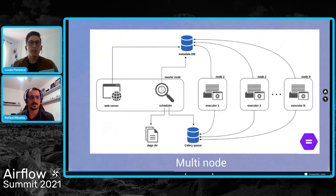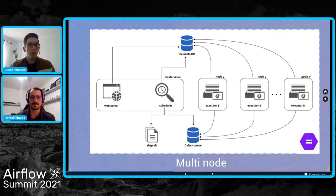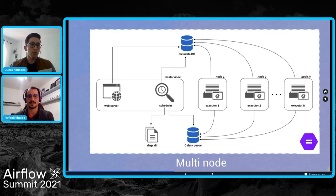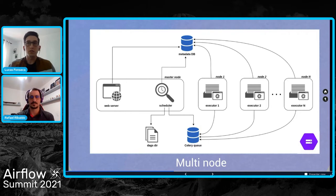In this multi-node approach, the web server, the scheduler, and the executor run independently in distinct nodes. The celery queue handles the tasks concurrently until the workers are able to execute them, respecting the parallelism thresholds. The Composer is self-managed, so we can focus on supporting business demands more than caring about the infrastructure. With this architecture, we think we are prepared to quickly support the expected growth by scaling up horizontally or vertically without much effort from other engineers.